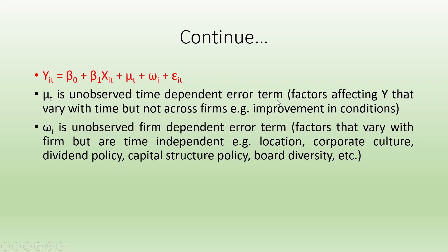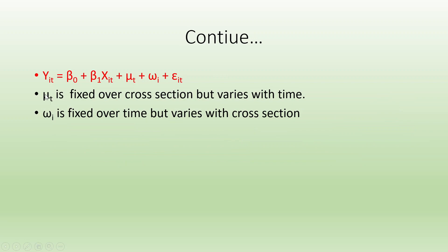μ_T captures factors affecting y that vary with time but not across the firm — for example, improvement in conditions. ω_i is an unobserved firm-dependent error term — factors that vary with firm but are time independent — for example, location, corporate culture, dividend policy, capital structure, policies and board diversity. In the equation y_it = β₀ + β₁X_it + μ_T + ω_i + ε_it, μ_T is fixed over cross section but varies with time, while ω_i is fixed over time but varies with cross section.